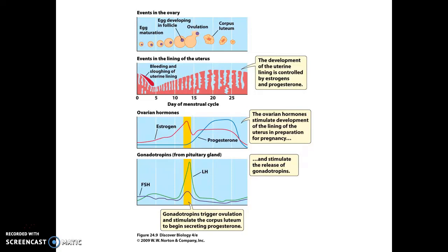As that progesterone level becomes elevated, the endometrium becomes thicker, waiting for a possible implantation of a developing embryo. If implantation does not occur, the progesterone level will fall, and that triggers menses, or the release of the endometrial tissue during the menstrual cycle.